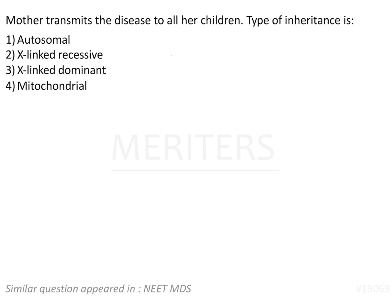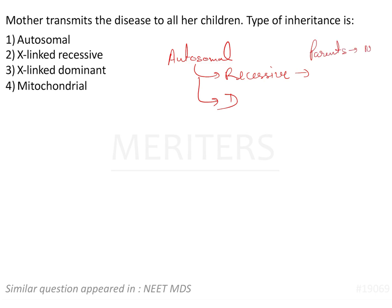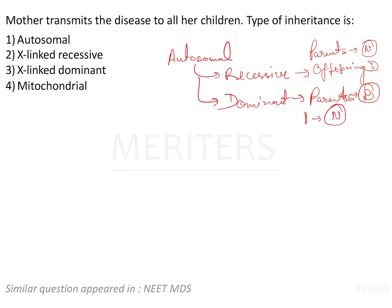We have already discussed that autosomal inheritance can be recessive or dominant. If it is an autosomal recessive trait, the parents might look normal but the offspring seems to be diseased. In autosomal dominant, the parents seem to be diseased, but one of the offspring is normal.